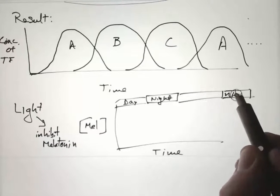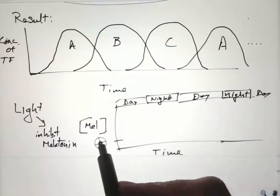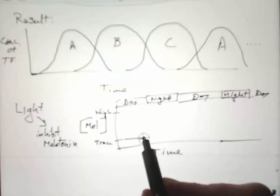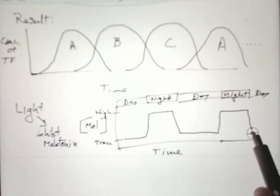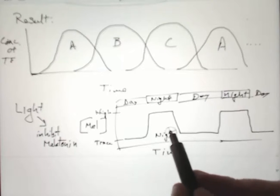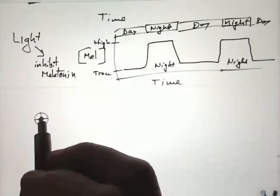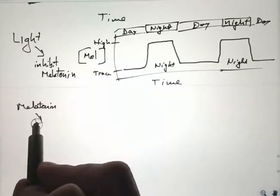If we did a drawing here with a couple of days and nights, what we'd see is starting off with trace levels of melatonin to high levels of melatonin. We'd be low during the day, high at night, low during the day, high the next night. So melatonin is high during the night.